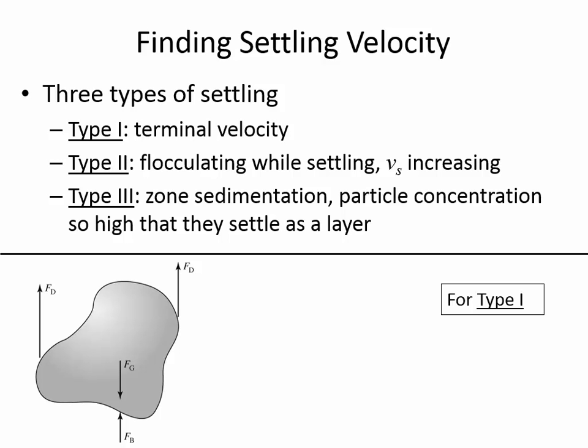For clarifiers in water treatment, we use Type 1 settling, which assumes terminal velocity. The particle reaches a settling velocity and keeps going at that speed the whole time as it falls — similar to skydiving, where you only accelerate for the first two seconds, and after that it feels like floating. For these particles, they reach their terminal velocity in less than a hundredth of a second and then fall at the same speed the whole time. That's what Type 1 settling means.